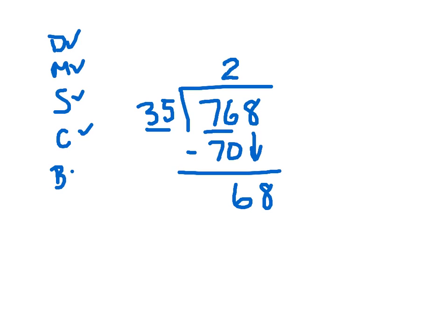How many times will 35 go into 68? Well, that's just going to go one time. 35. Subtract. 8 minus 5, 3. 6 minus 3 is 3. So we have 21, remainder 33.